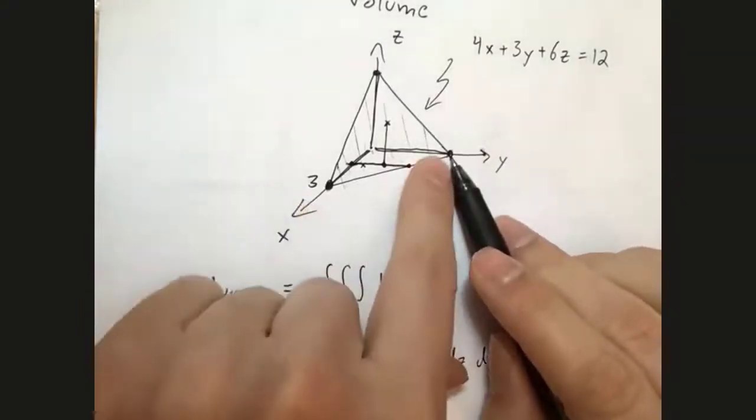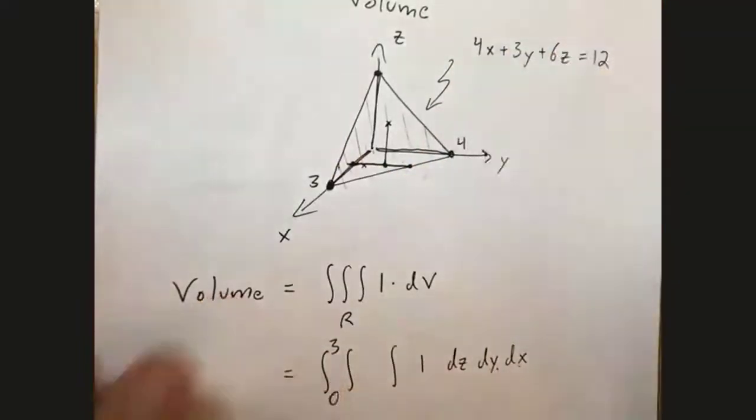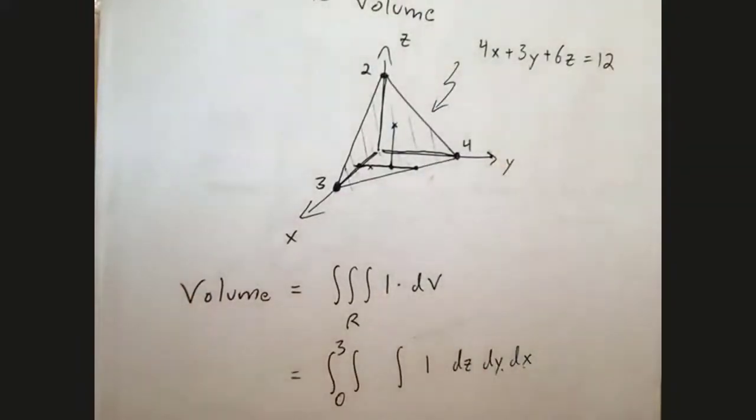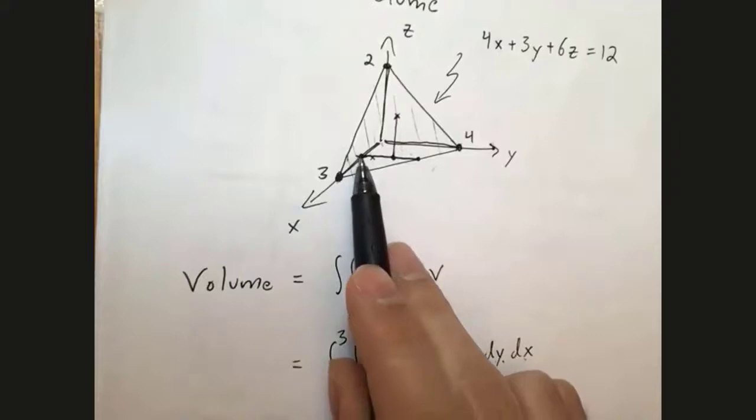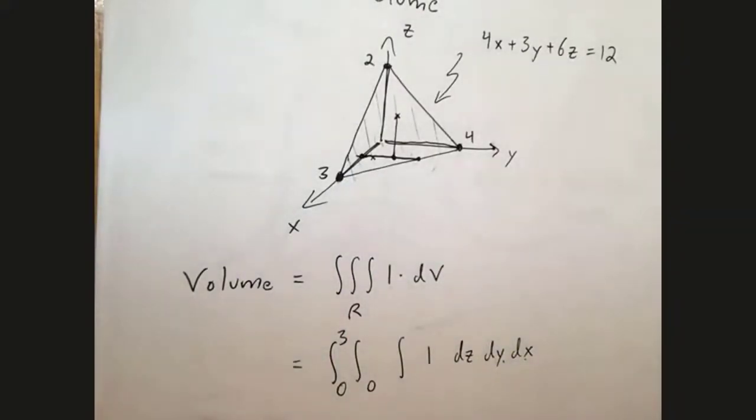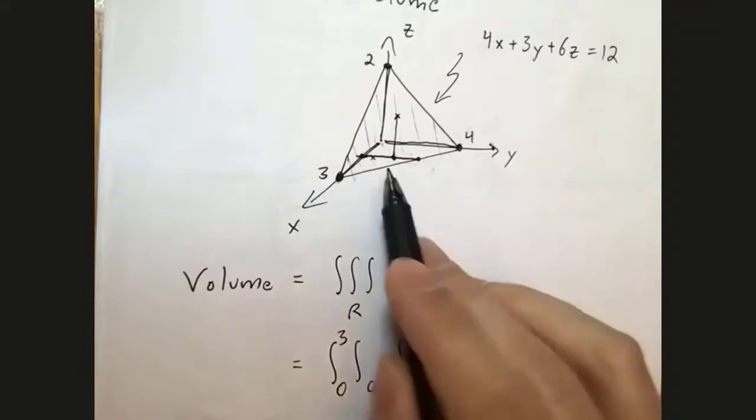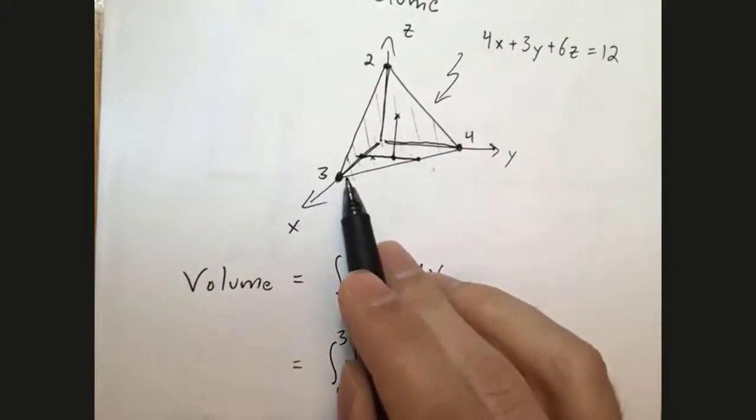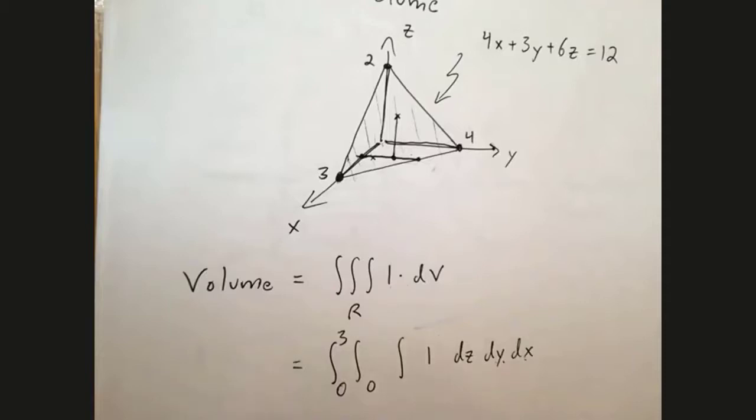I can also figure out what these points are. At this point x and z are 0, so I get y equals 4. And this point is when x and y are 0, so z equals 2. Now I can figure out the bounds for this integral. y starts at 0. How high does y go? y goes up to this line, but this is not a constant because it depends on x. Depending on the value of x, I go a different distance. We have to figure out what function of x this is. Let's look at this graph in the xy plane.